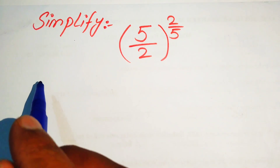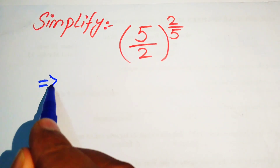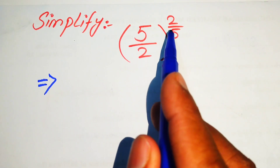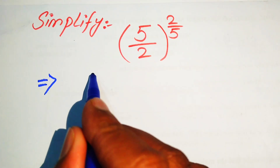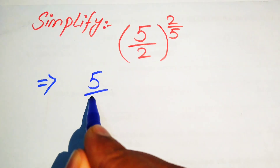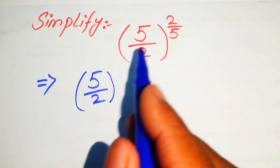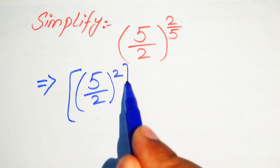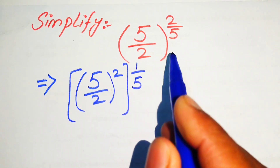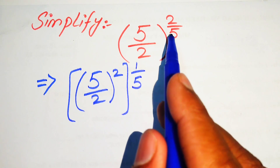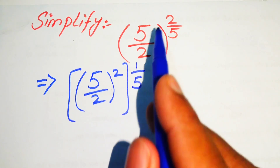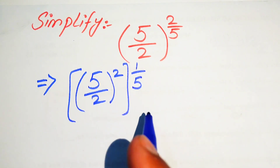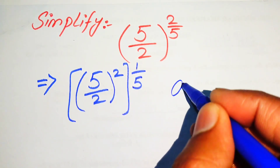The very first step is to break its exponent. This is 2/5, and we write it as (5/2) with exponent 2, and its whole exponent is 1/5. Because we have 2/5, we move this 2 inside the term and move 1/5 to the outside.